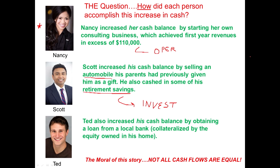Ted went and got a loan — that's analogous to a financing cash flow. What do you think about the sustainability of that? Is he going to be able to keep getting loans? Probably not. So even though all three people individually increased their cash by $50,000 each, they're not equally successful. Nancy is clearly the winner. Take that analogy and think of it as a business.